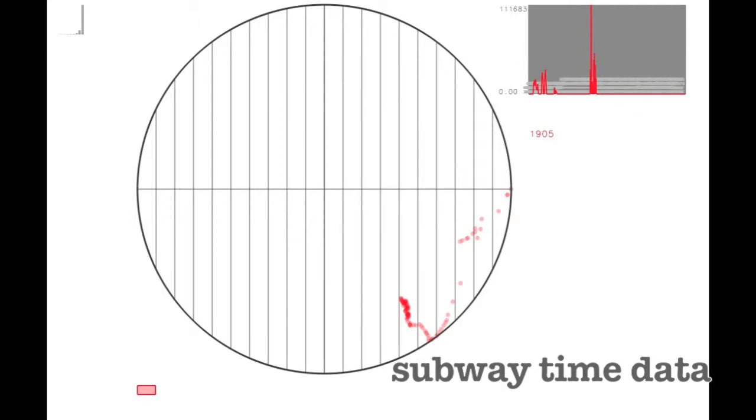This example dataset shows how ridership on the New York City subway has changed over the years and across the different subway stops. In this view, each point represents a year in the dataset, and they form a curve as we move from year to year.